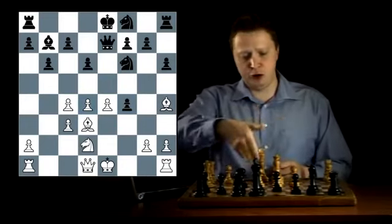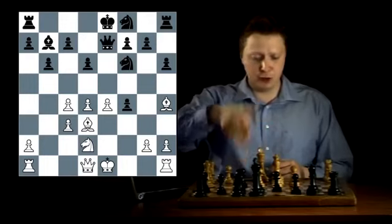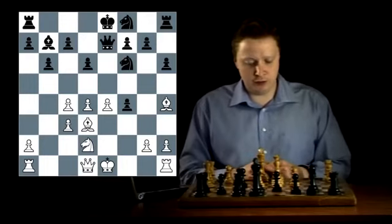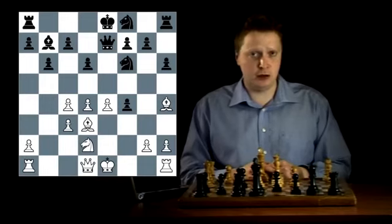And okay, this is much stronger than taking on d4 because black does win a pawn here, and the only logical continuation for white would be kingside castling.